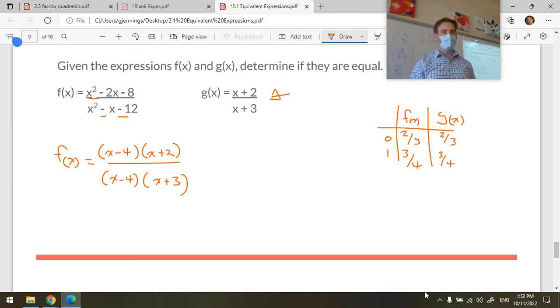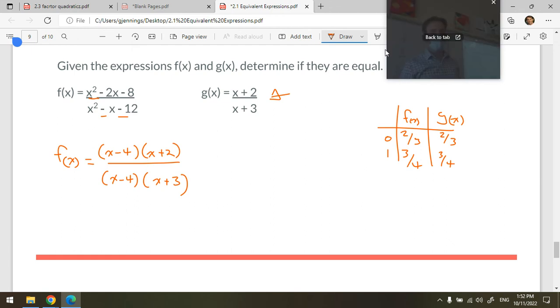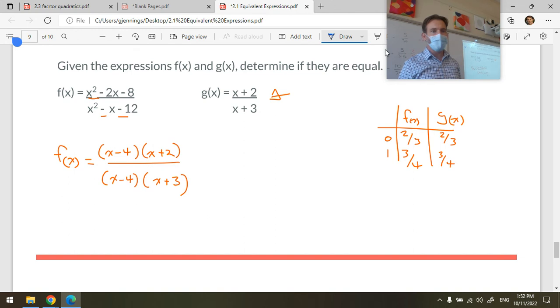Zoe asks: They're equal at zero and they're equal at one. It means they're highly likely to be the same thing, but we haven't necessarily proven it yet. This will prove it. Now notice that we have the same binomial factor on the top and bottom there. The x minus 4 is going to be the same as x minus 4 for every value of x except for one value. And then we're left with x plus 2 divided by x plus 3, and that was g of x.